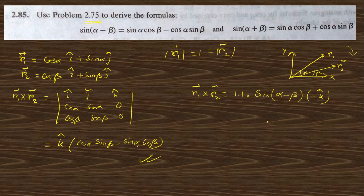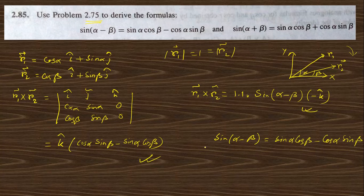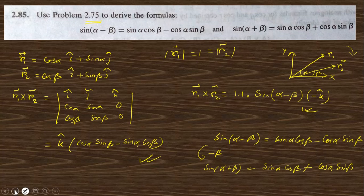Comparing the two expressions, sin(α − β) = sin α cos β − cos α sin β. Replacing β with −β and using cos(−β) = cos β and sin(−β) = −sin β, we get the addition formula: sin(α + β) = sin α cos β + cos α sin β. This completes the proof.